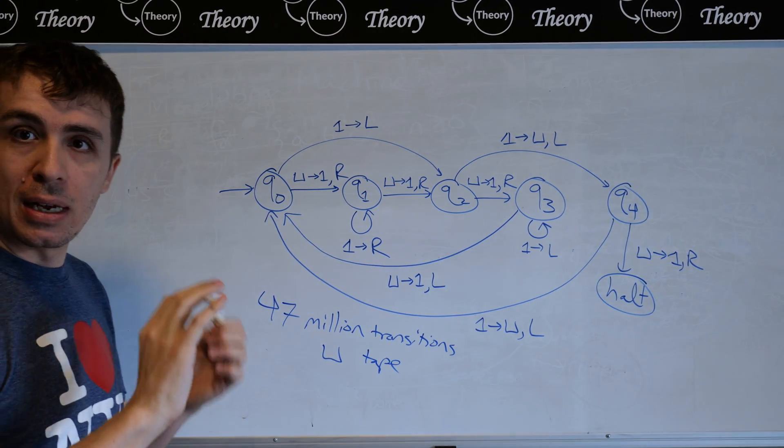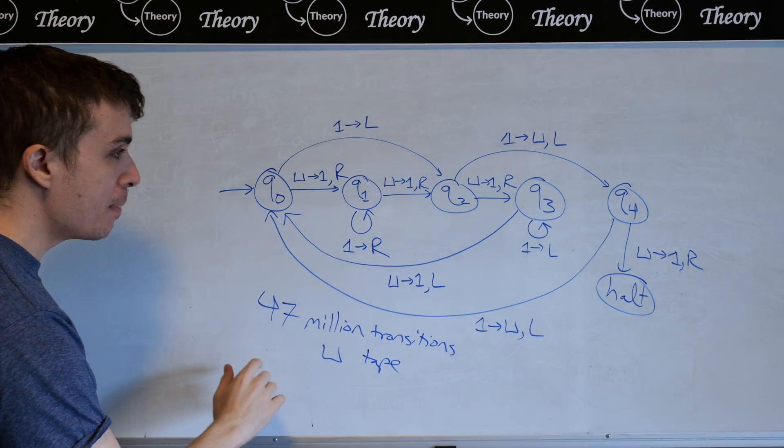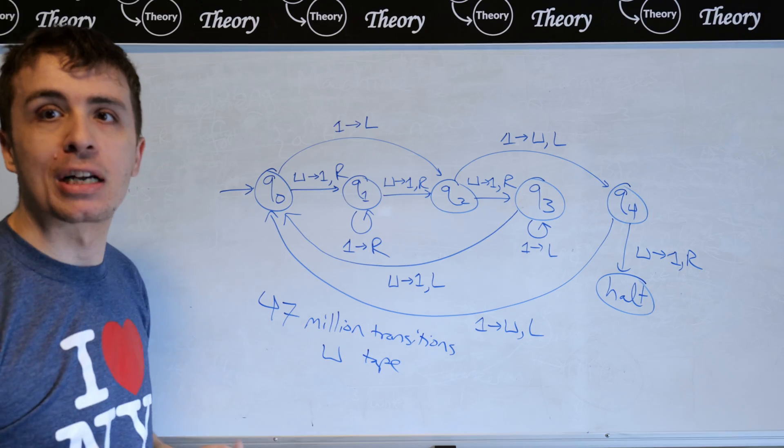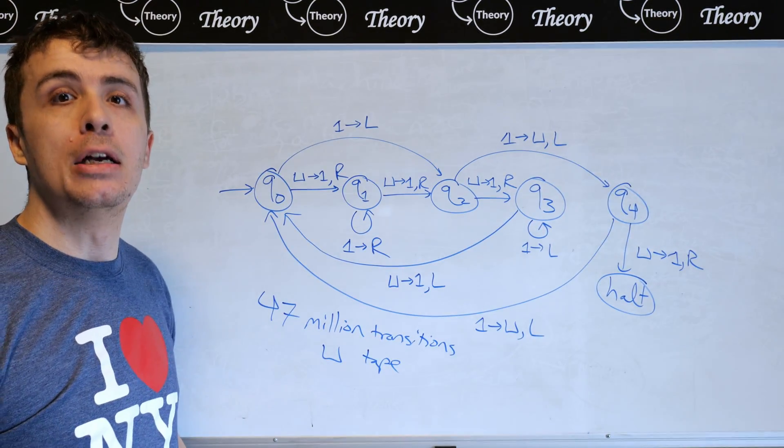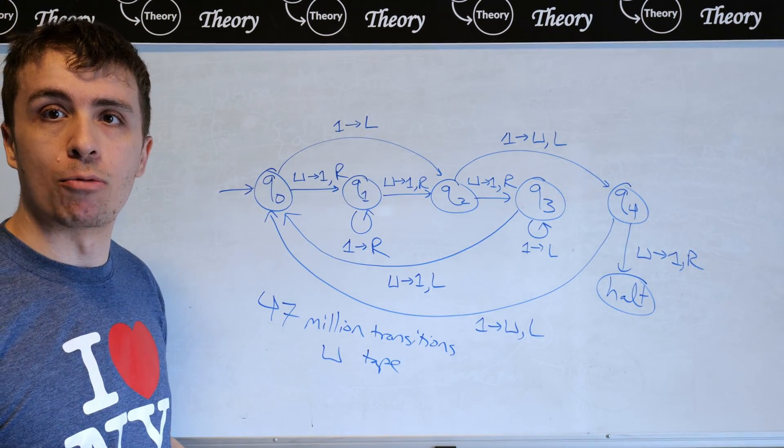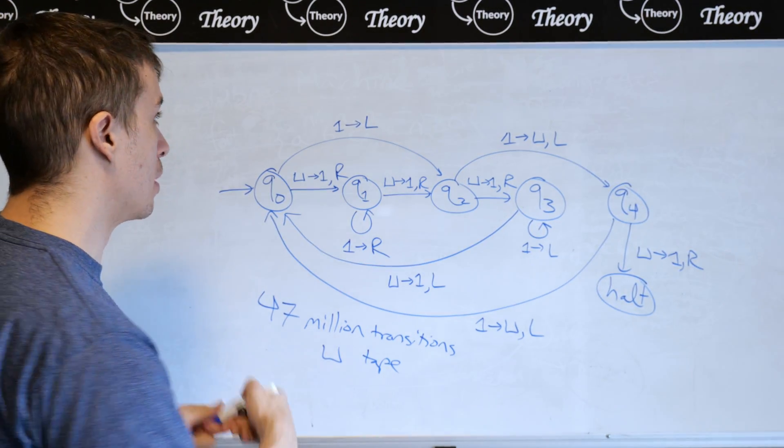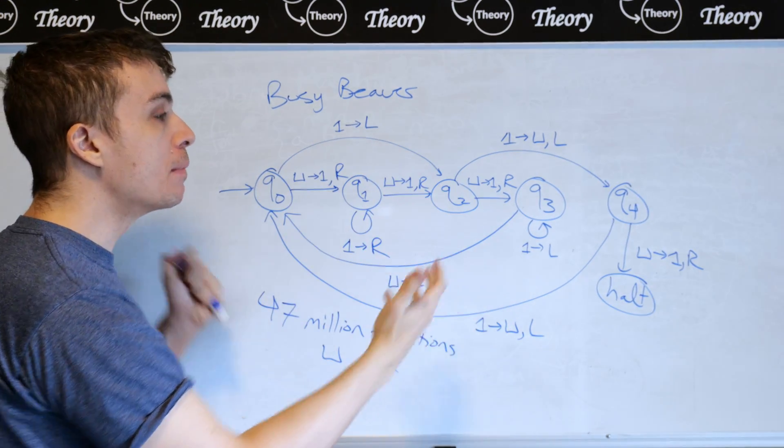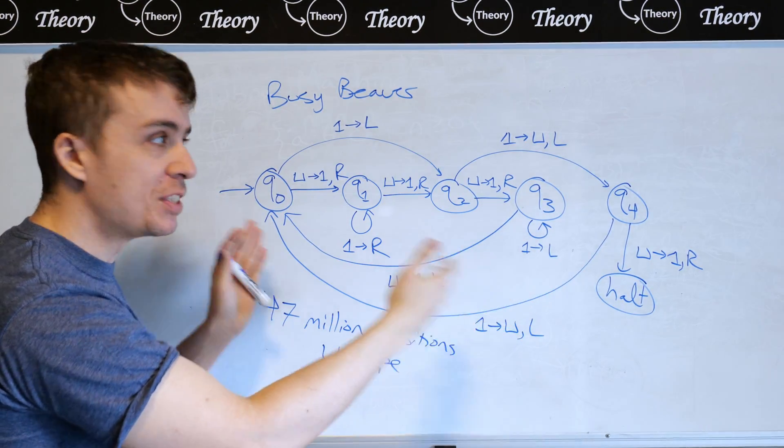So if you start this machine with completely blank tape, and you just let it run, it's going to hit this halt state in approximately 47 million transitions. So how was this machine found? It was found through a research problem, which is called the busy beaver problem.